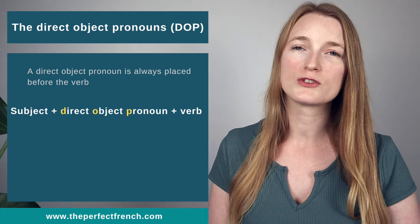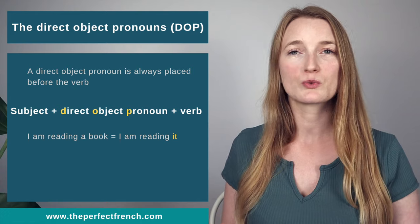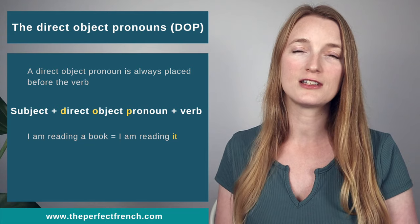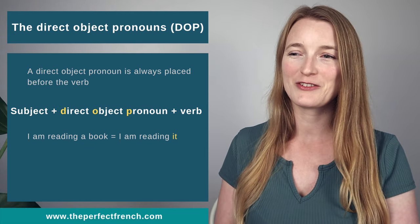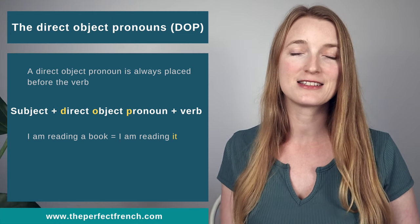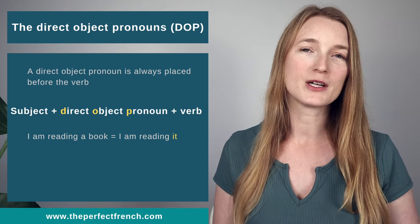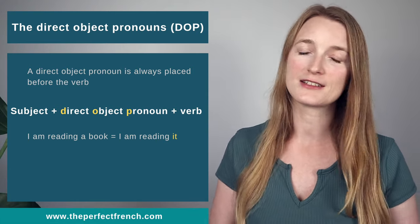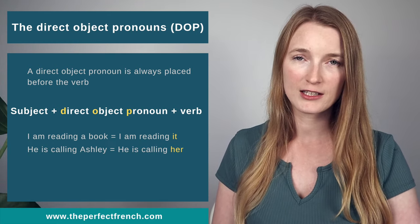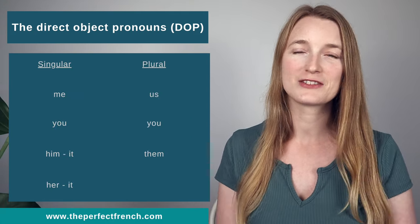You have almost the same in English — it's not hard. If we look at "I am reading a book," we saw that "a book" is the direct object, and if you turn it into a pronoun, it's "I am reading it." "It" is the pronoun. And we have the same for Ashley: Il appelle Ashley — He is calling Ashley — becomes He is calling her.